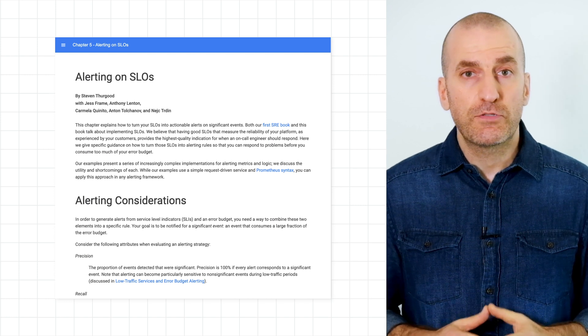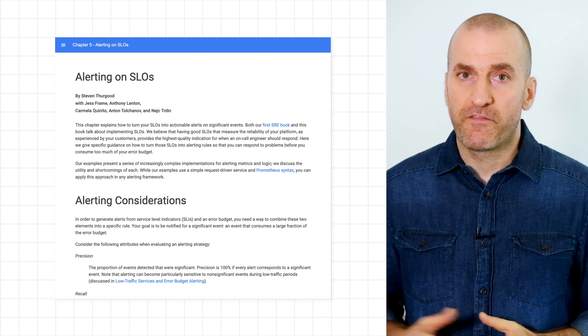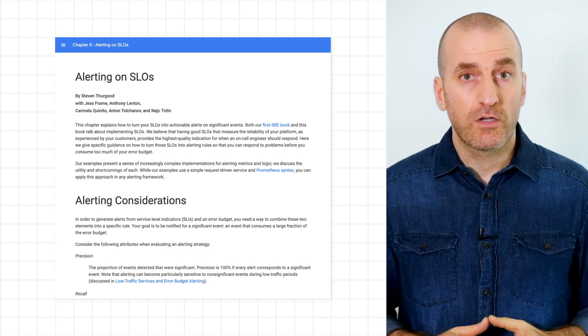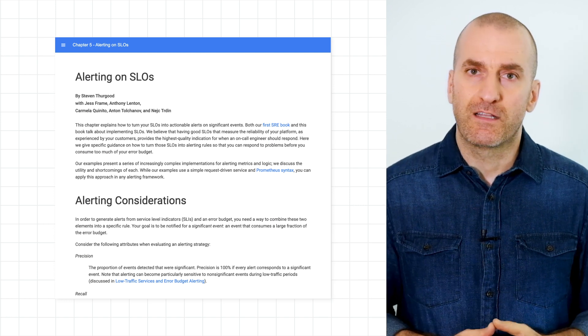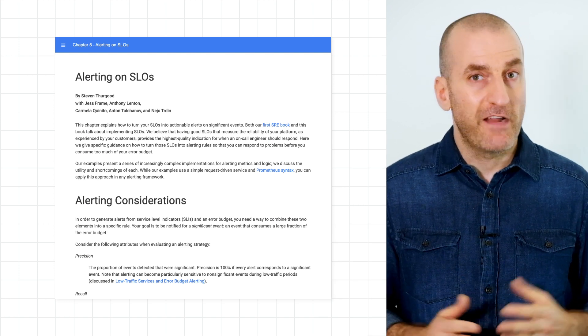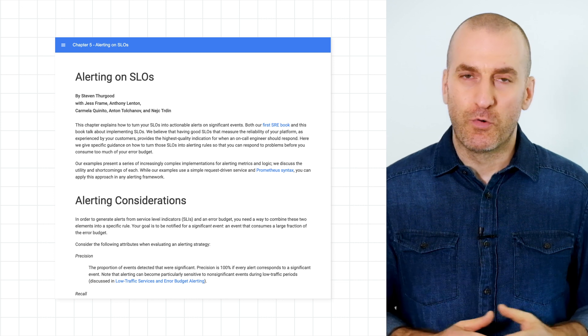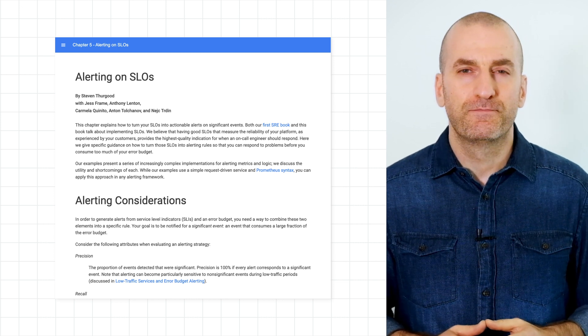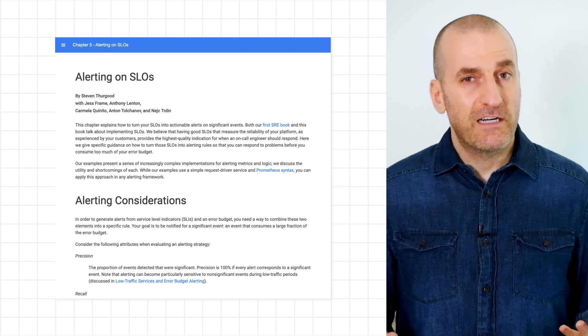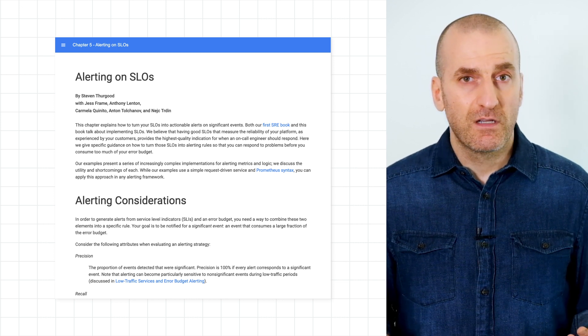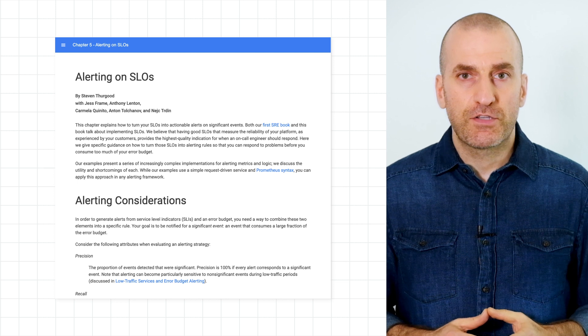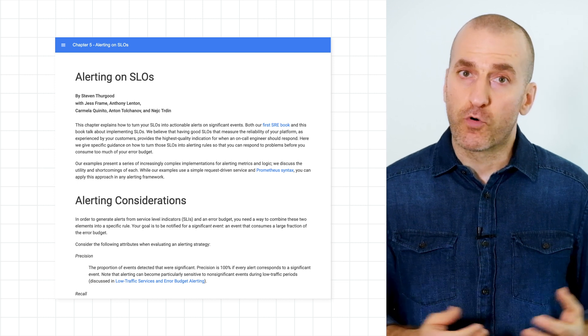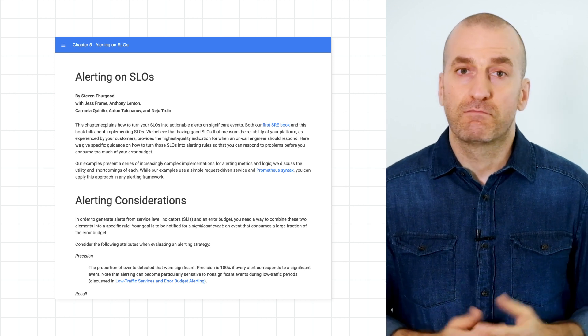To start, let's cover some math. Let's review Chapter 5 of the SRE Workbook called Alerting on SLOs. If you haven't read it before, no worries — we'll link to it in the episode notes below. As covered in that chapter, your alerting strategy should include four considerations.